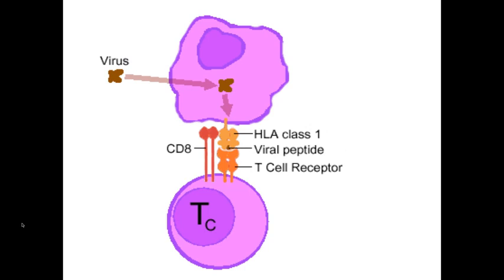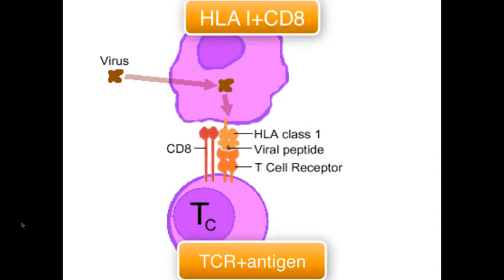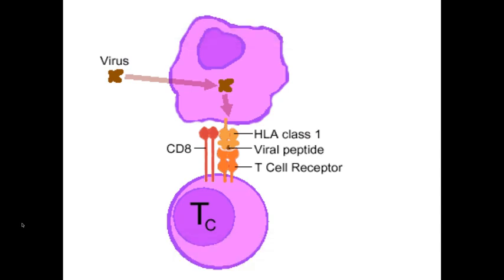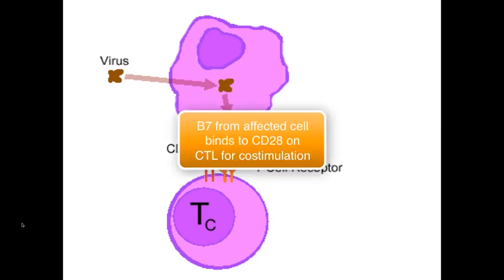The interaction will be between HLA class 1 and the CD8 marker, while the actual peptide — which can be a viral peptide or an endogenous peptide if the cell is tumor-like — will bind to a specific T cell receptor. Sometimes this binding alone is not enough. The infected cell may also need to give a co-stimulation to the cytotoxic T cells, and this co-stimulation can be via a cytokine called B7, which will go and bind to a CD marker on the T cell called CD28.